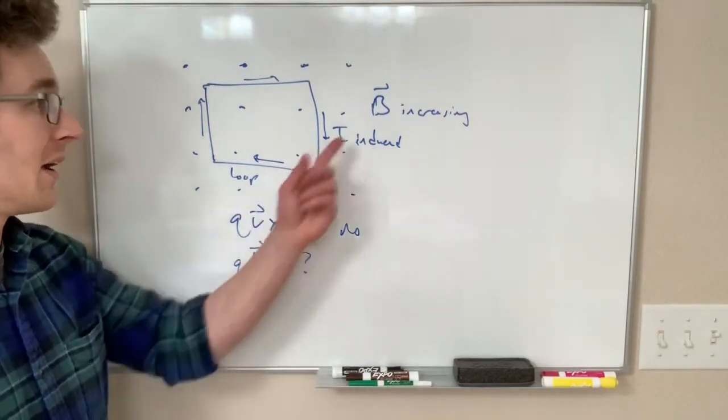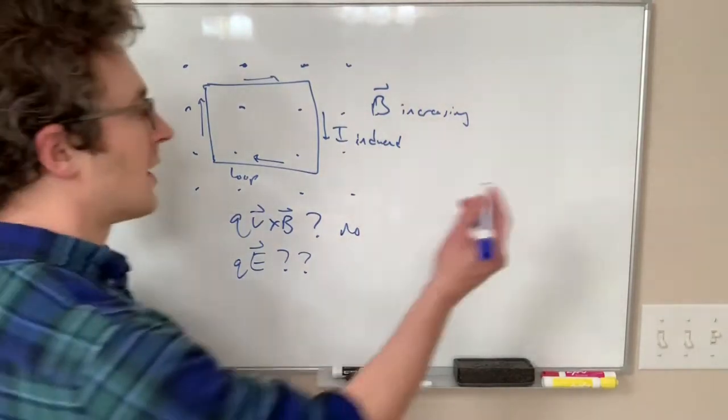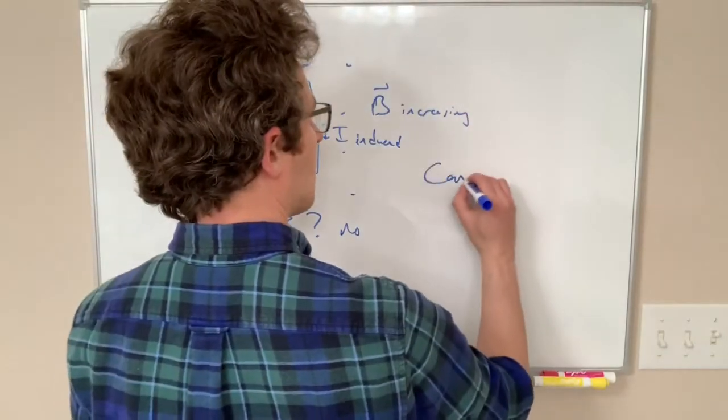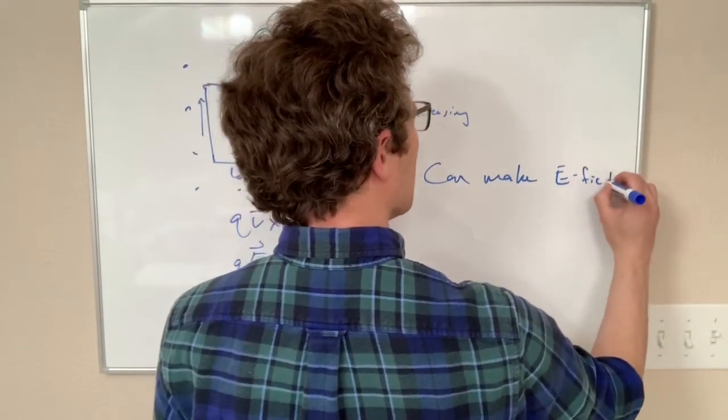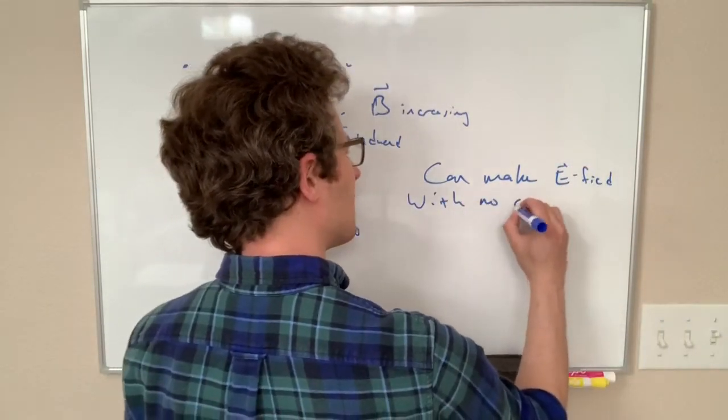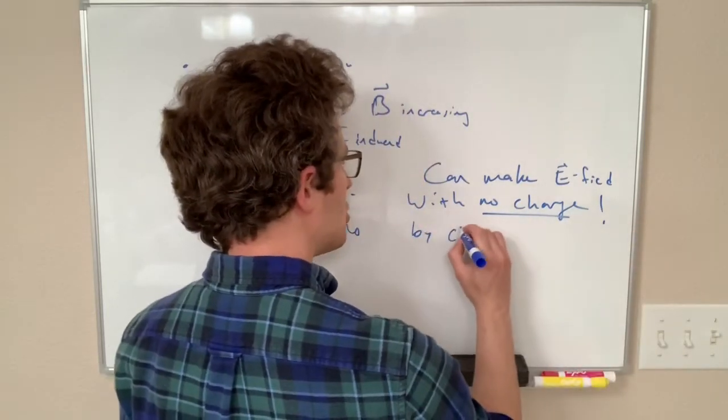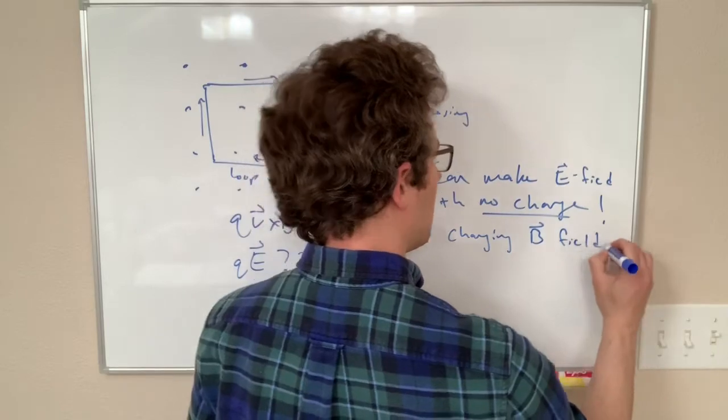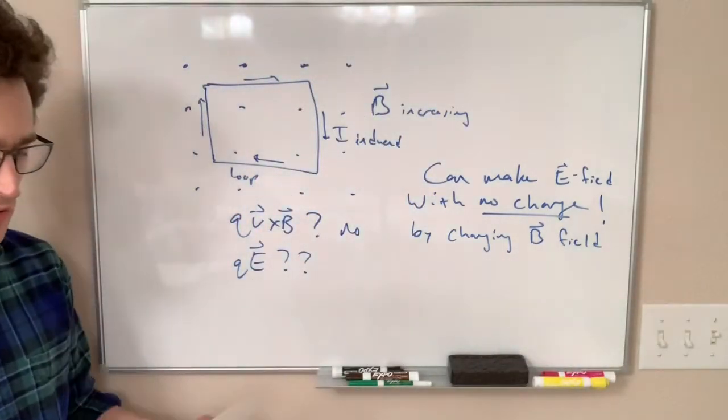and that is by changing magnetic fields. So it turns out that you can make an E field with no charge by changing the B field. And we'll learn other ways to write this,